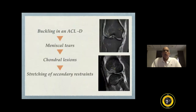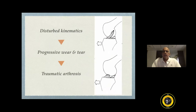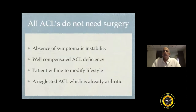In a symptomatic ACL deficient knee, if a patient continues to have repeated buckling episodes, it results in secondary meniscal lesions, chondral damage, and stretching out of secondary restraints. Basically, it is a disturbed kinematics of the knee which results in progressive wear and tear and eventually traumatic arthrosis. And to stop this deterioration of the knee, for symptomatic ACL deficient knees, anterior cruciate ligament reconstruction is advisable.